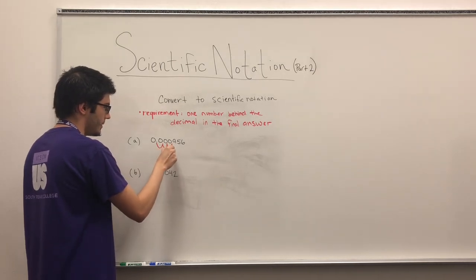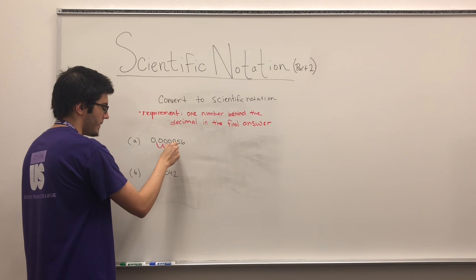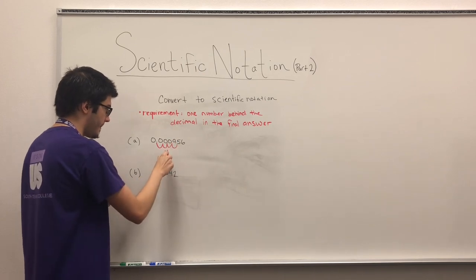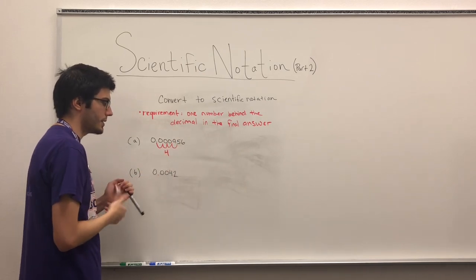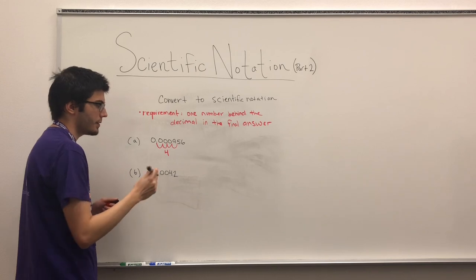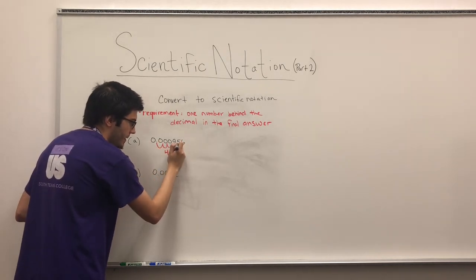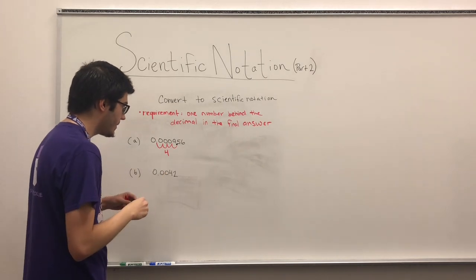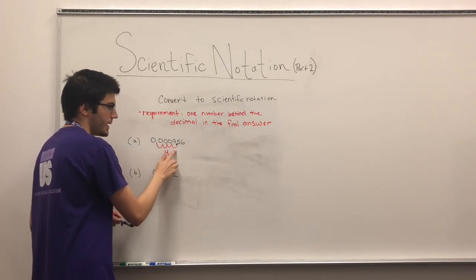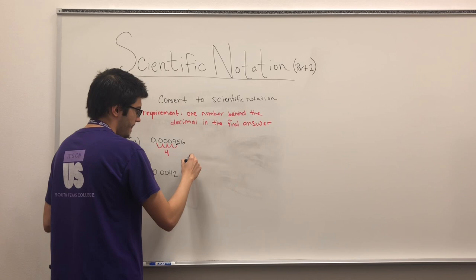So one, two, three, four. I've passed nine. I've taken four steps. And so imagine you take this decimal, and you move it, and you put it over there. So now it's 9.56.